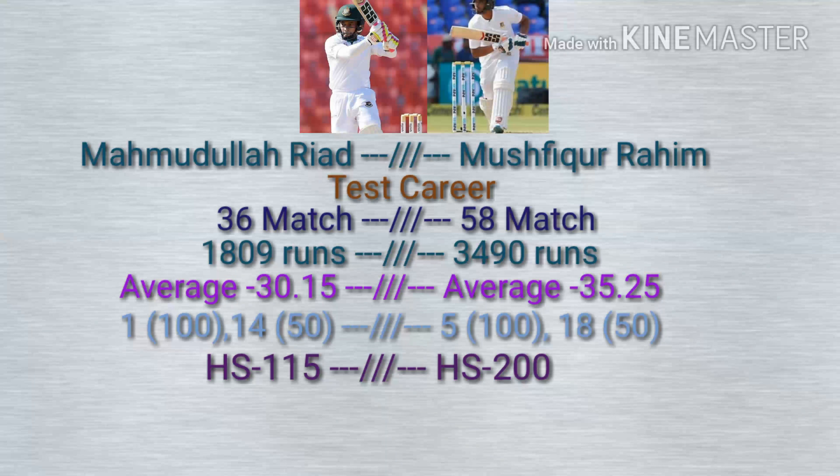Mushfiqur Rahim gained 4512 runs; on the other hand, Mahmoudullah Riyadh scored 3120 runs. The average of Mushfiqur Rahim is 33.50 and Mahmoudullah Riyadh is 33.91.